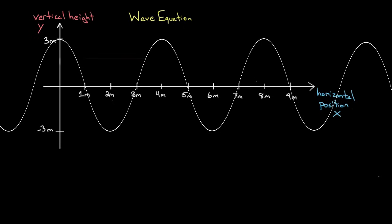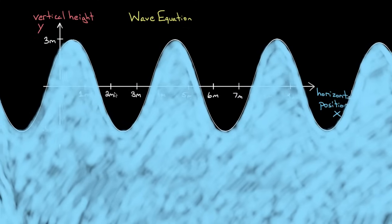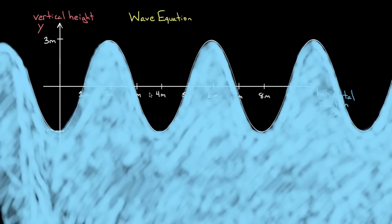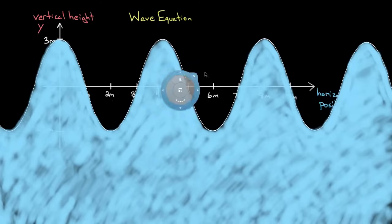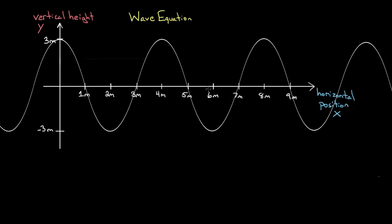You graph this and you get a graph like this, which is really just a snapshot, because this is vertical height versus horizontal position — it's really just a picture. If I were to fill this in with water, that's what the wave looks like at that moment in time. If I were to show what the wave does, it travels toward the shore. So a height versus position graph is a picture or snapshot of what the wave looks like at all horizontal positions at one particular moment in time.